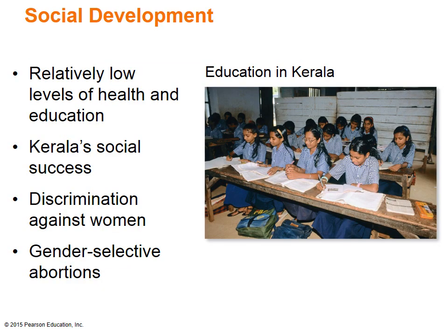South Asia's social indices show relatively low levels of health and education, which is hardly surprising considering the region's poverty. However, education in Kerala has been a huge success. India's southwestern state of Kerala has virtually eliminated illiteracy and is South Asia's most highly educated region. It also has the lowest fertility rate in South Asia. Many argue that women's education and empowerment are the best and most enduring form of contraception.